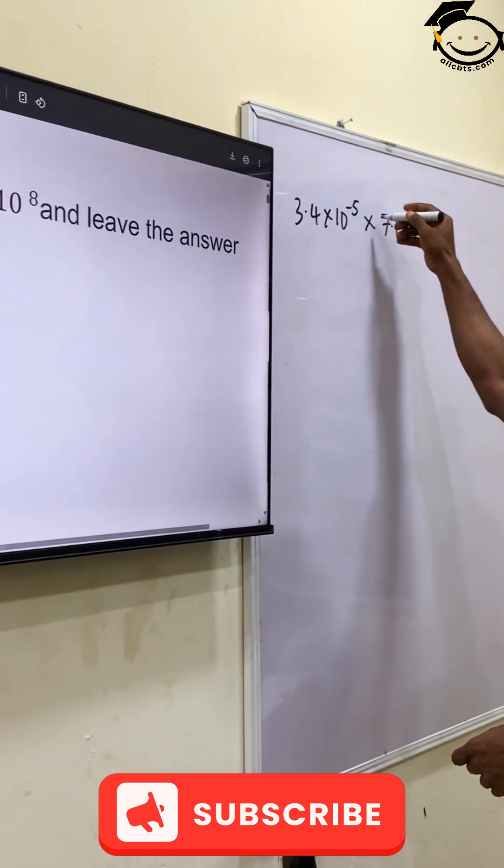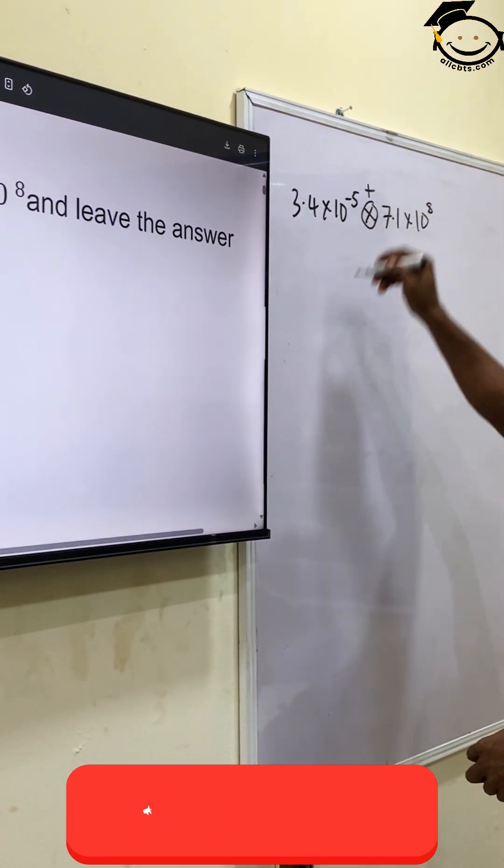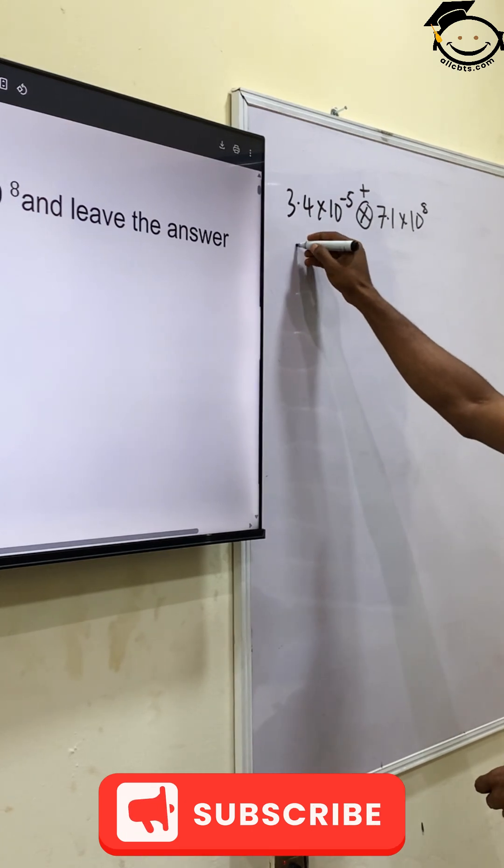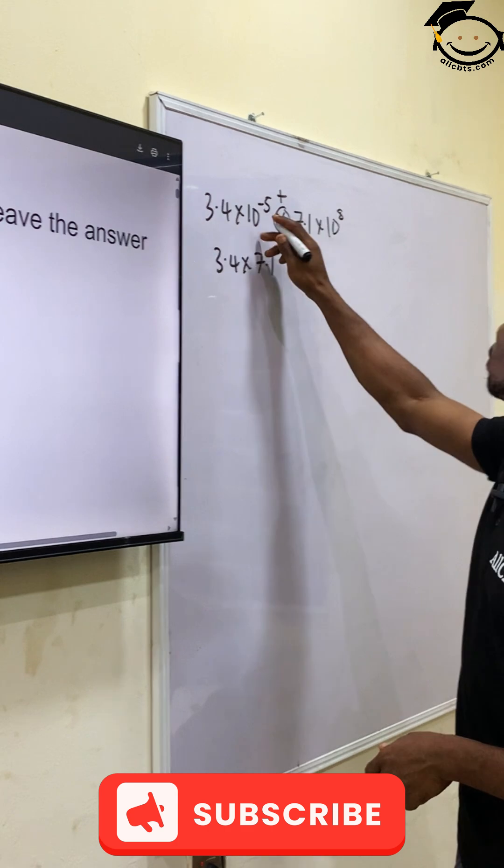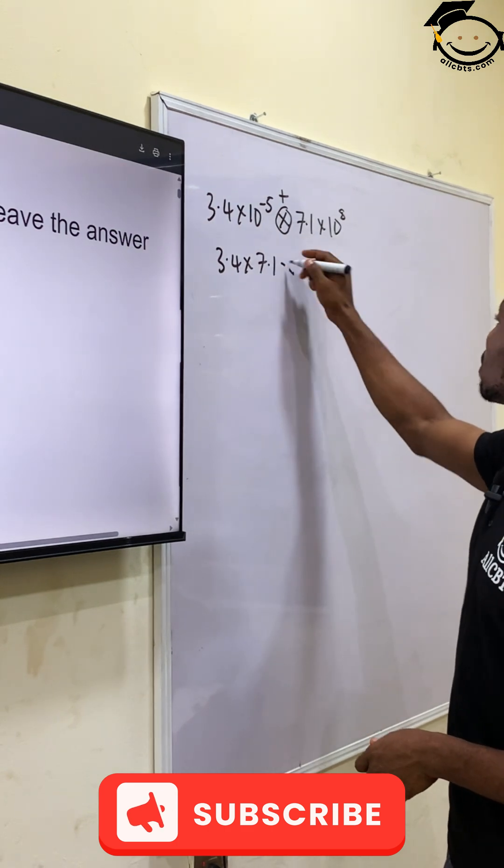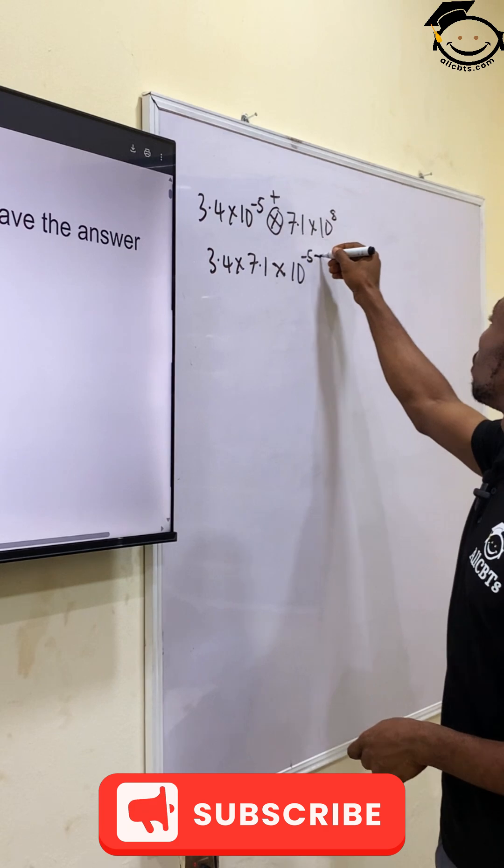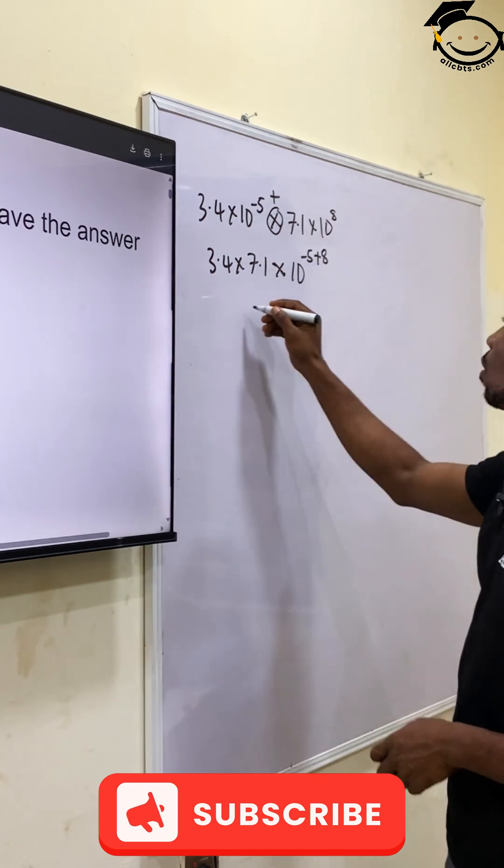In our law of indices, multiplication turns to addition. So this becomes 3.4 times 7.1 times 10 raised to the power minus 5 plus 8.